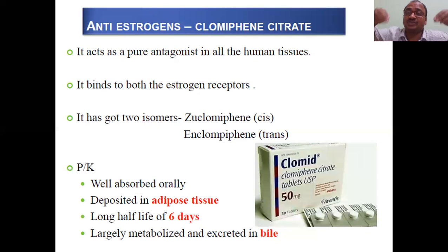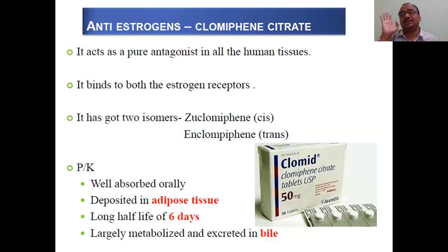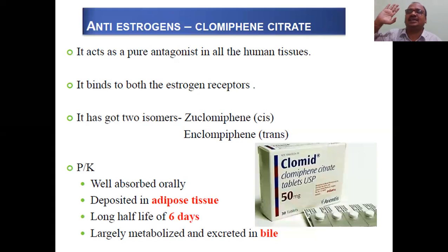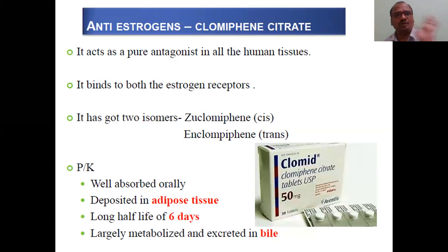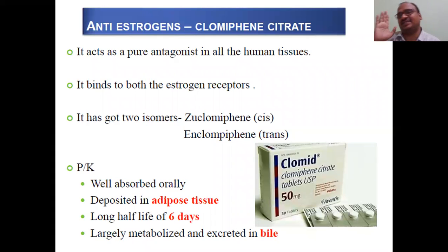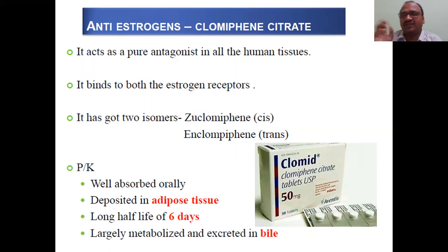Whenever there is excess estrogen in the female or male body, you have to take this tablet. It acts as a pure antagonist in all human tissues — both male and female. It binds to both estrogen receptors: ER-alpha and ER-beta. Clomiphene citrate has two isomers — Z-clomiphene (cis isomer) and E-clomiphene (trans isomer). Cis means same side; trans means opposite side.